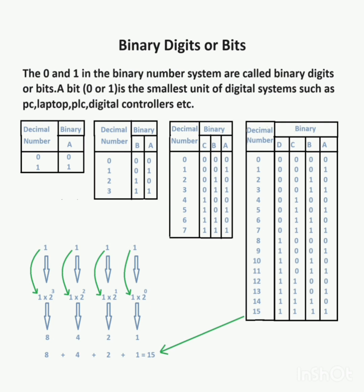The table shows single binary bit A, two binary bits A and B, three binary bits A, B, and C, and four binary bits A, B, C, and D, covering a total of 15 decimal numbers. Also shown for ABCD four bits are all values equal to one.